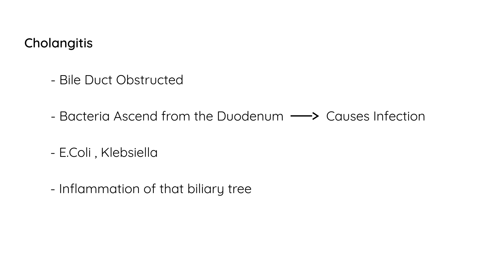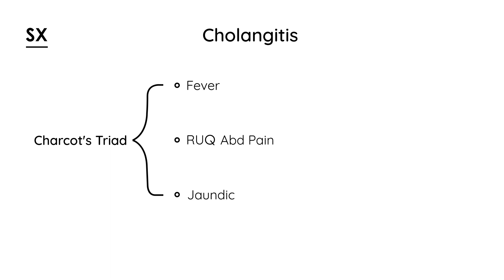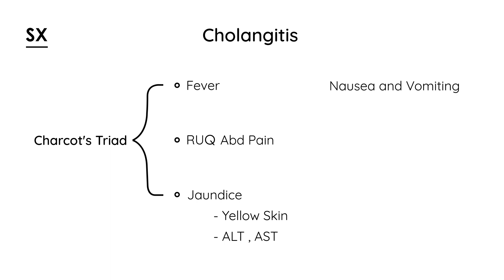The symptoms of cholangitis have been given a special name: Charcot's triad. The three components are: first, fever; second, right upper quadrant abdominal pain; and third, jaundice — the yellowing of the skin — which can also be detected by elevated liver enzymes such as ALT and AST. Other nonspecific symptoms like nausea and vomiting will commonly appear on licensing exams.